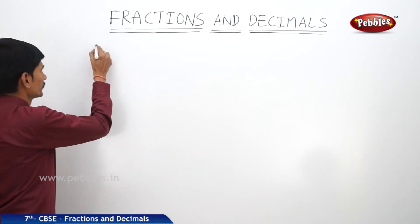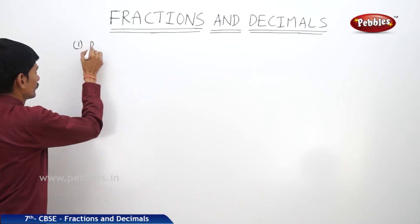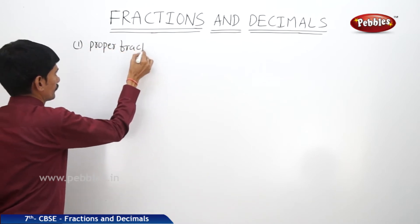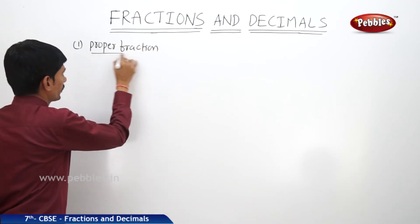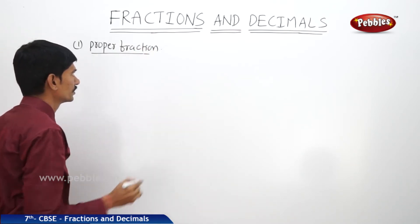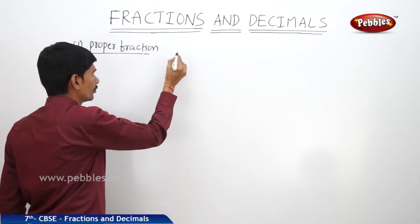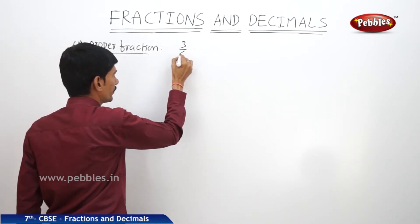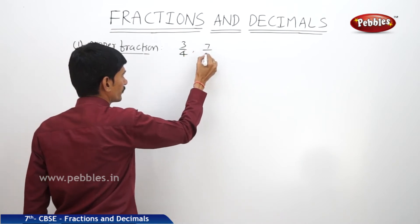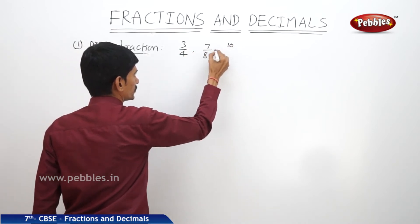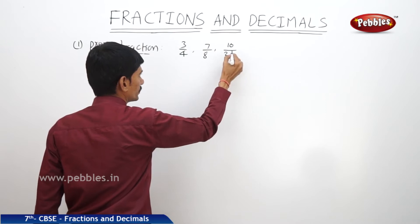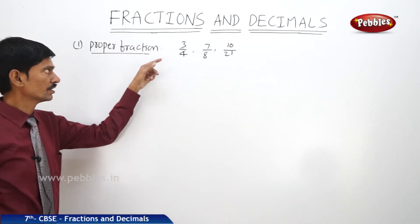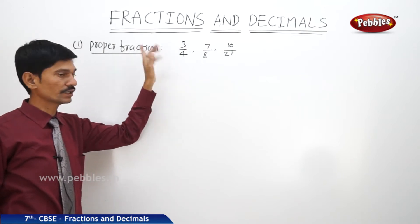What is a proper fraction? A proper fraction represents a part of the whole thing. For example, 3/4, 7/8, 10/21 — these are all proper fractions. In all proper fractions, the numerator is less than the denominator.